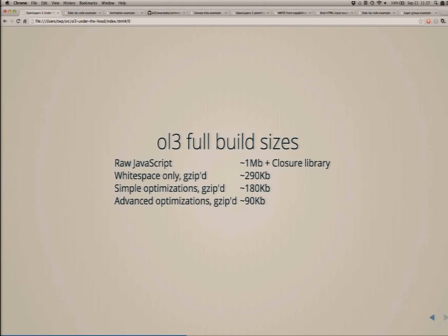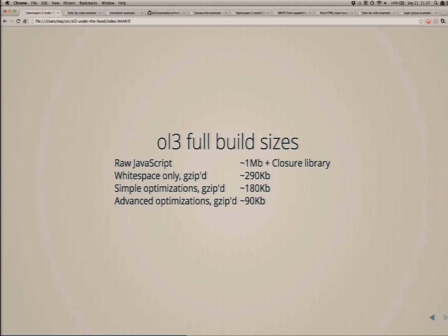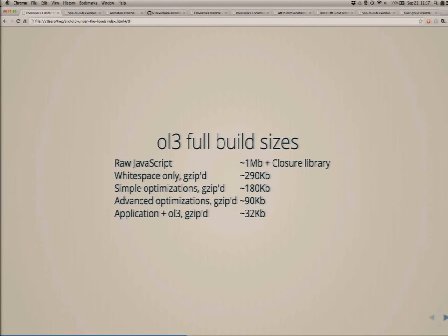This is the current size of the library. In raw JavaScript it's gone over a megabyte, excluding the Closure Library. Once you strip out whitespace and comments, you're down to 300KB, and zipped the full library is currently about 90 kilobytes — that's everything: all the functionality, formats, parsers, backends and so on. With the Closure Compiler, if you build your application with OpenLayers 3 together, you can get your entire application and OpenLayers 3 down to about 32KB.